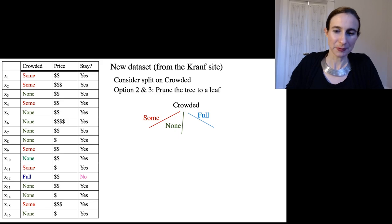Okay, now option two, which is the same as option three, because this is a very small tree. Option three, two and three is to prune the tree to a leaf.